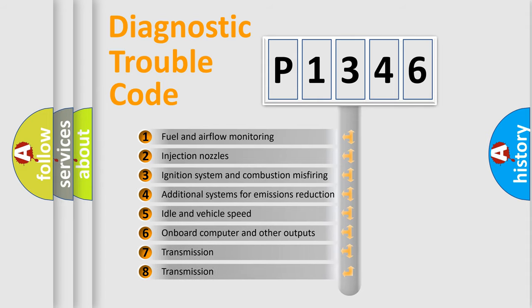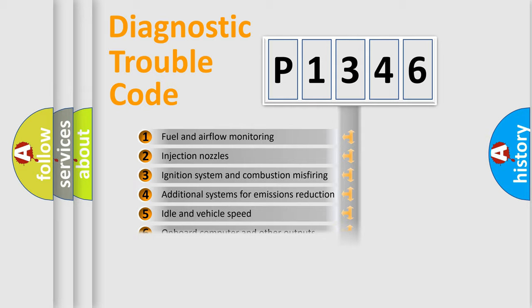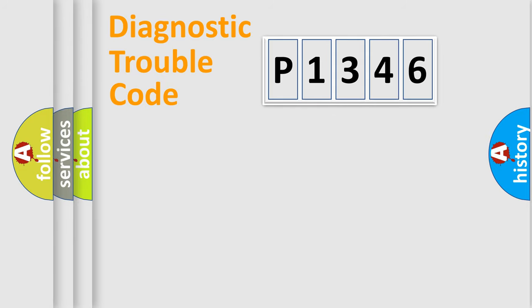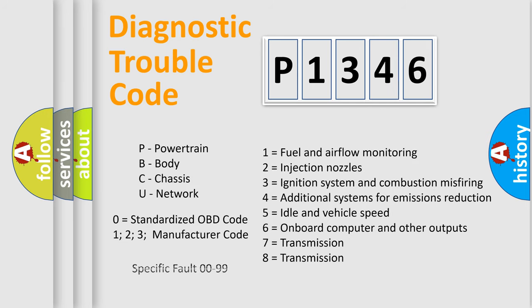The third character specifies a subset of errors. The distribution shown is valid only for the standardized DTC code. Only the last two characters define the specific fault of the group. Let's not forget that such a division is valid only if the other character code is expressed by the number zero.